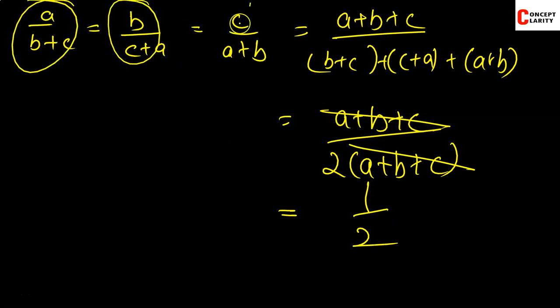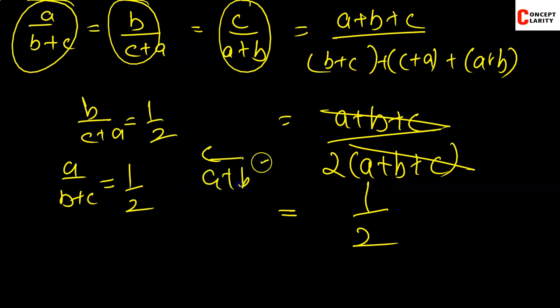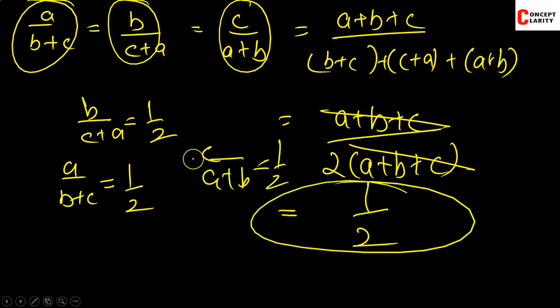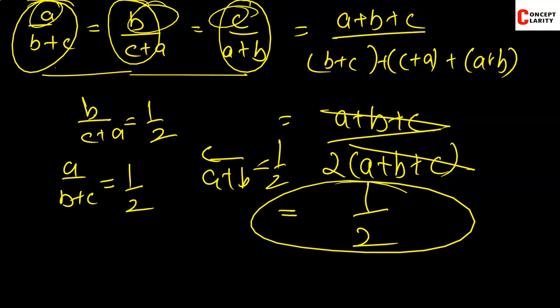So we have proved that every ratio is 1/2: a/(b+c) = 1/2, b/(c+a) = 1/2, c/(a+b) = 1/2. Remember: when two or more ratios are equal to each other, the sum of their antecedents to the sum of their consequents also bears the same ratio. Hope you like this video — please subscribe to Concept Clarity and the CodeEffectively channel. Thanks for watching.